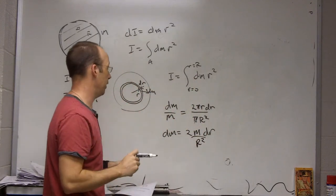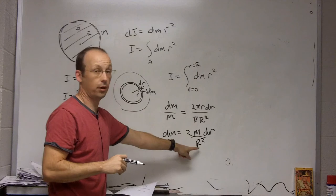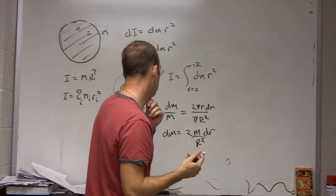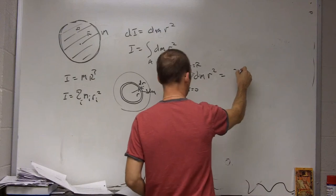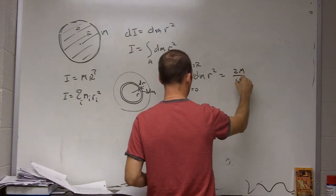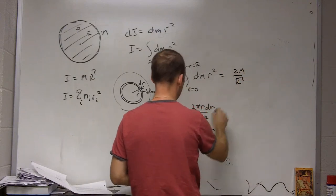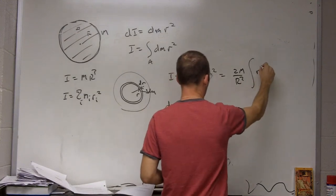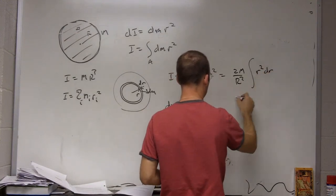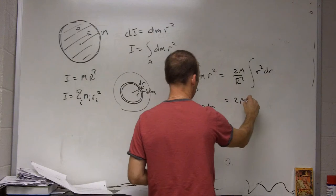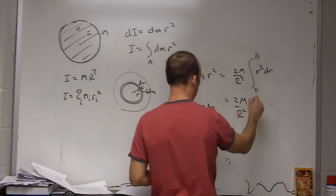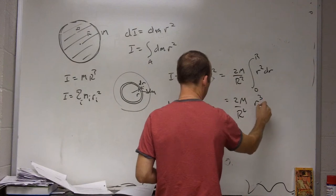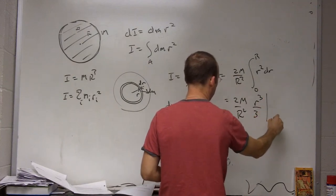And now I can put that in up there. 2m over R squared - it's a constant. So this is going to be 2m over R squared, and then I get the integral of r squared dr. And that's going to be 2m over R squared, this is from zero to R, r cubed over three from zero to R.